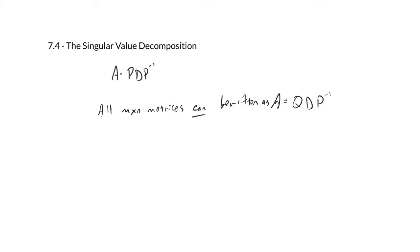The singular value decomposition is one of the most useful factorizations in applied linear algebra. And what's also interesting is that this works for M by N matrices. For our A equals PDP inverse, they had to be square. So we'll start with some underlying concepts of what's going on with this singular value decomposition.